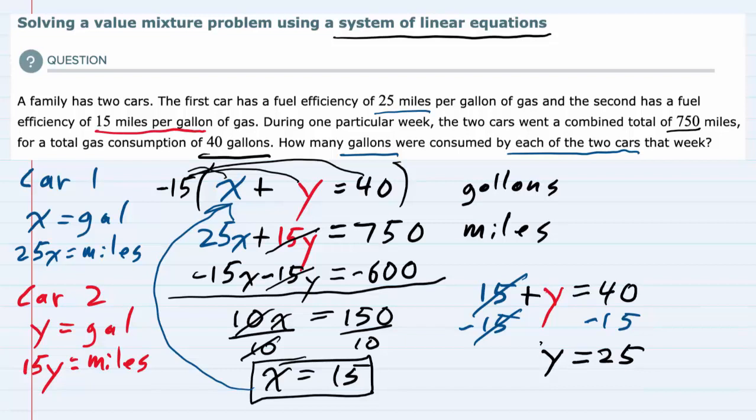So Car 1 used 15 gallons, Car 2 used 25 gallons, for a total of 40 gallons.